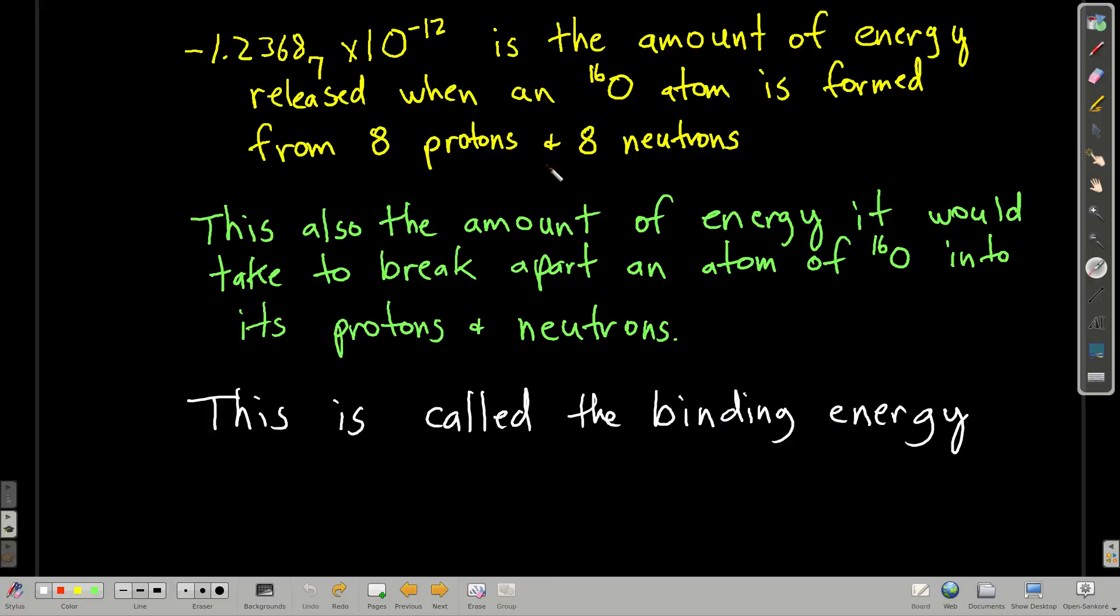What that is, that's how much energy would be released per nucleon when you make an oxygen atom, if you were to make it by combining 8 protons and 8 neutrons. What this also means is that that's how much energy it would take to break that nucleus, the nucleus of oxygen 16 apart, into its protons and neutrons.